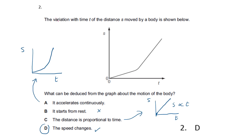The answer is D — the speed changes. We know that speed is the gradient of the displacement-time graph. We've got a shallower gradient changing to a steeper gradient, showing a speed change from slow to faster. So the answer is D: the speed changes.